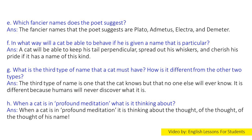F. In what way will a cat be able to behave if he is given a name that is particular? Answer: A cat will be able to keep his tail perpendicular, spread out his whiskers and cherish his pride if it has a name of this kind.